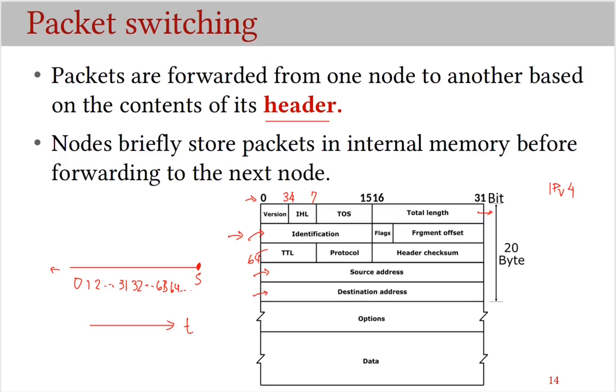Once a packet reaches an intermediate node, that node would briefly store this packet in its internal memory before forwarding to the next node because it needs to examine the packet header. And therefore, these networks are also referred to as store and forward networks.